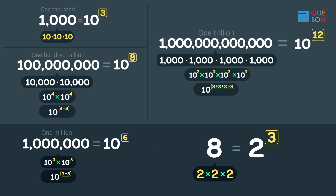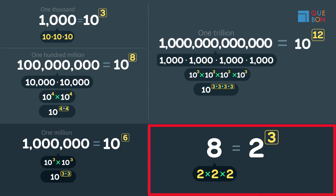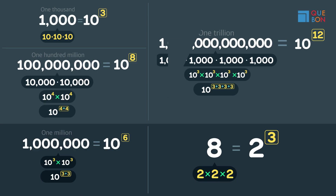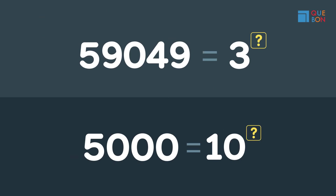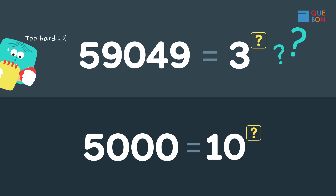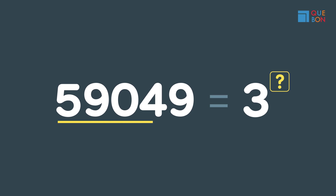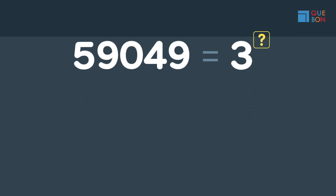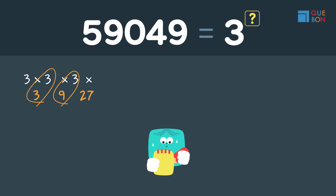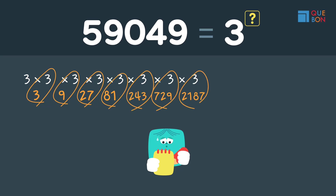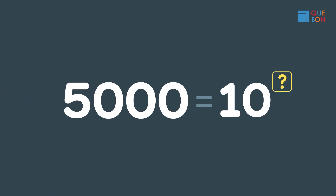These questions are so easy, right? That's because they use nice round numbers that are easy to calculate. But when it comes to harder problems, it's very hard. For example: fifty-nine thousand and forty-nine is three multiplied by itself how many times? Or: five thousand is ten multiplied by itself how many times? Isn't this much harder?